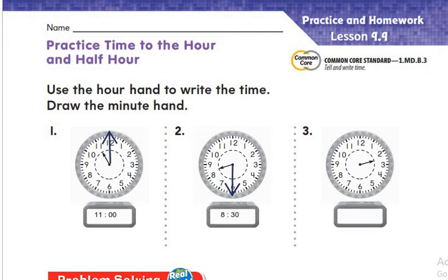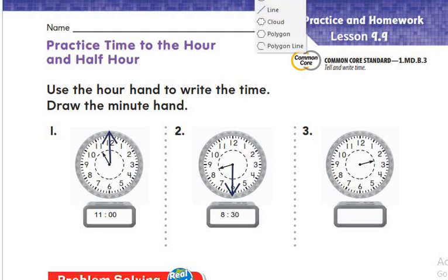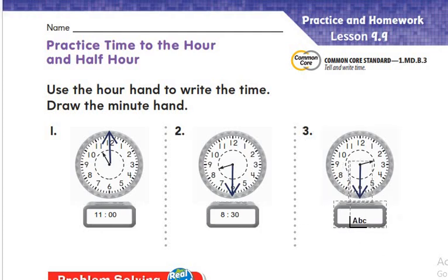Let's go to number 3. The hour hand here points between 2 and 3, and we take the number before the hour hand, so it's half past 2. We write it as 2:30. The minute hand points to number 6, and it is 2:30.